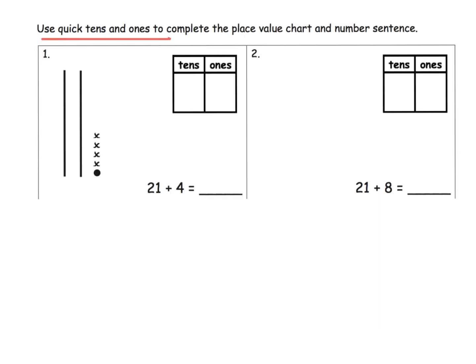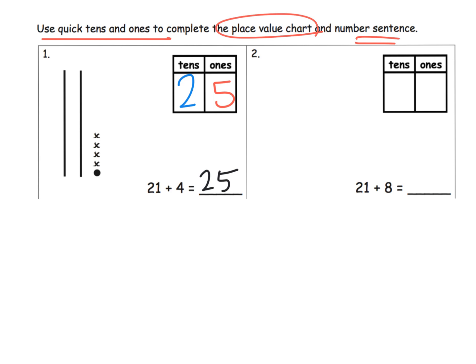We're told to use quick tens and ones to complete the place value chart and the number sentence. We've got our quick tens, our place value chart, and our number sentence. This is a count on: you have 21 — shown as two quick tens and a one — and you're adding four more. Once we've built the answer, we look at it and say that's 20 because it's two tens, plus five ones, so our answer is 25: two tens and five ones.